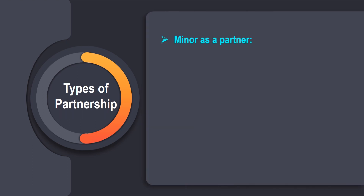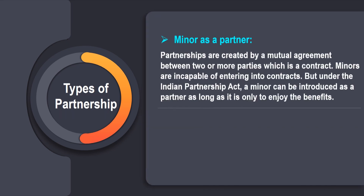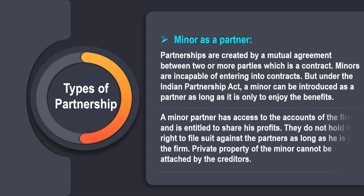Then we have minors as partners. Partnerships are created by mutual agreement, which is a contract, and minors are incapable of entering into contracts. However, under the Indian Partnership Act, a minor can be introduced as a partner as long as it is only to enjoy the benefits. A minor partner has access to the firm's accounts and is entitled to share in profits, but does not hold the right to file a suit against the partners while in the firm. The private property of a minor cannot be attached by creditors.